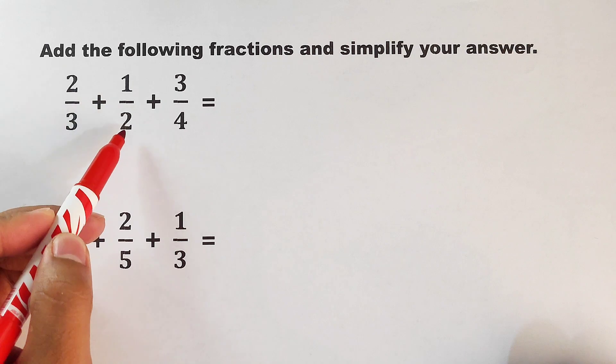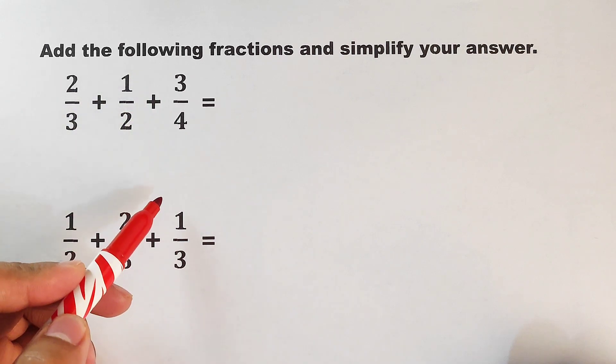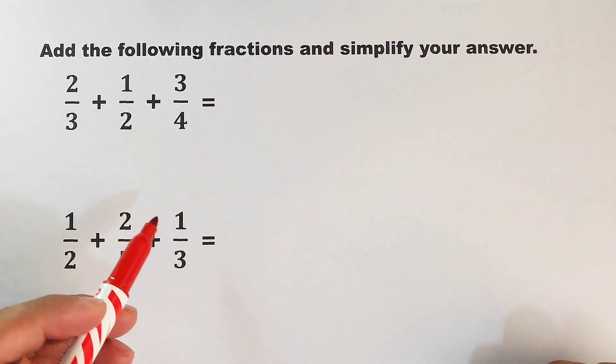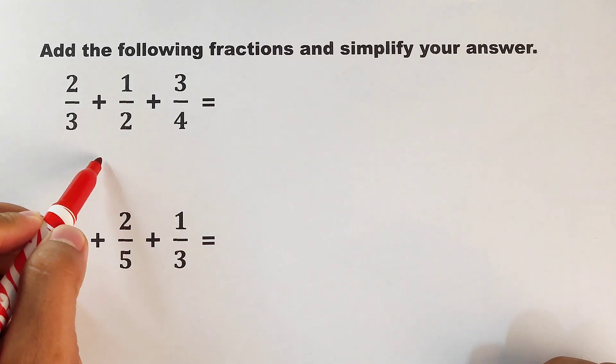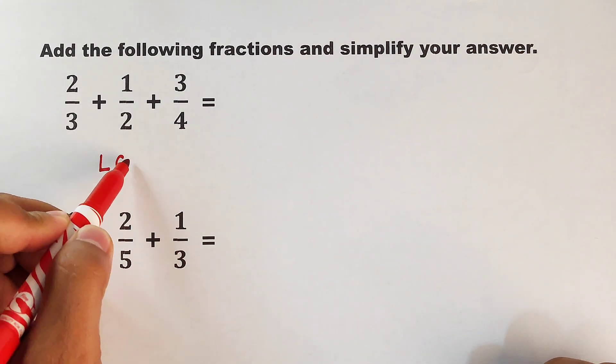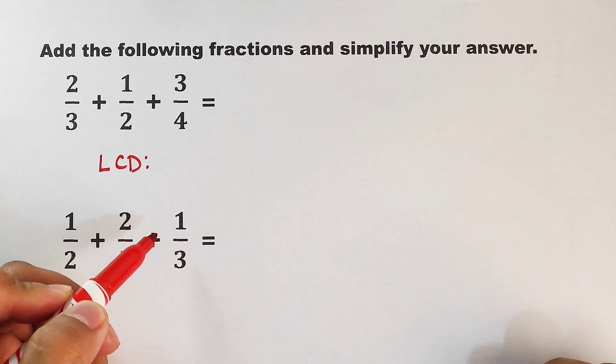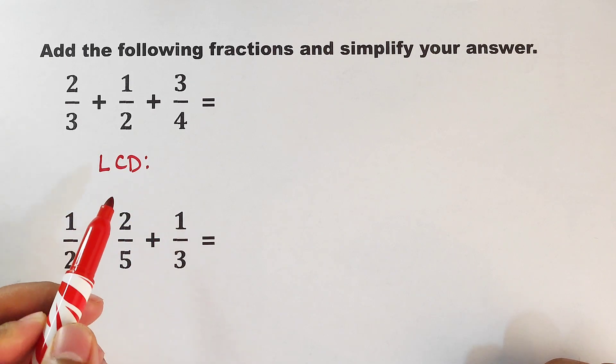We have 2 over 3 plus 1 half plus 3 over 4. So what are we going to do to add these three fractions? Basically, first we need to find the LCD between the denominators. The LCD is the least common denominator.